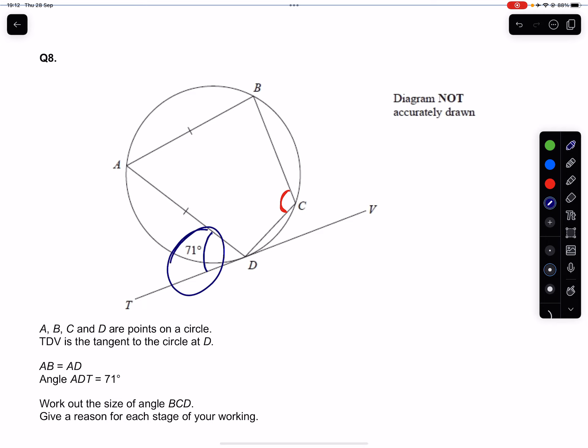We've been given this angle of 71 degrees. The only circle theorem that works for that is if at this point here, D, we extend it to get to point B.